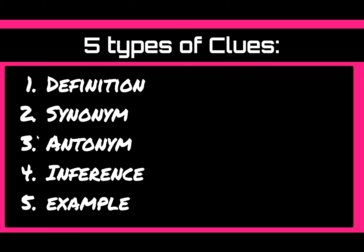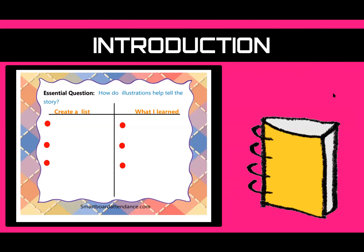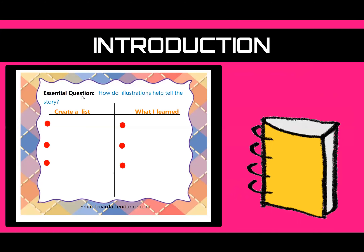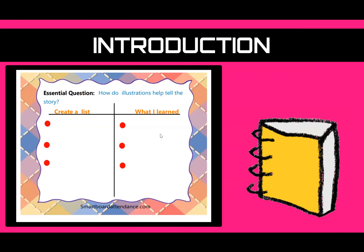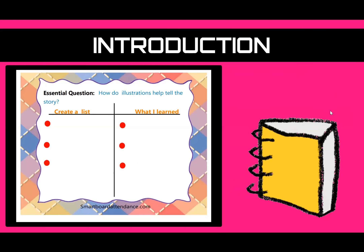In your next assignment you'll be looking at these as you read The Velveteen Rabbit. For text illustrations, once we are finished with this lesson I want you to write out what you have learned about text illustrations and how they can help you as a reader.